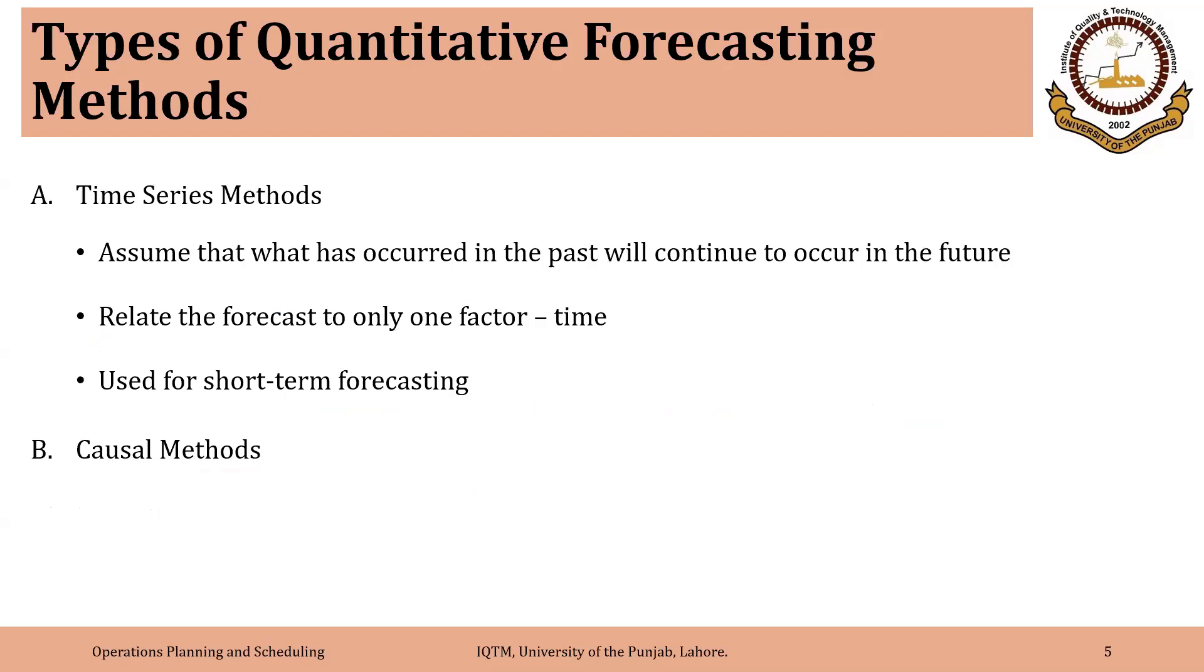So in general the quantitative methods can be classified into two groups, the time series methods and causal methods. Time series methods assume that what has occurred in the past will continue to occur in the future. So these methods relate the forecast to only one factor, that is time. And generally these methods are used for short term forecasting.